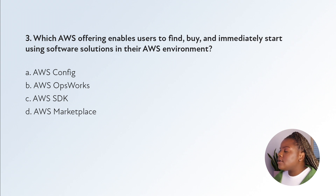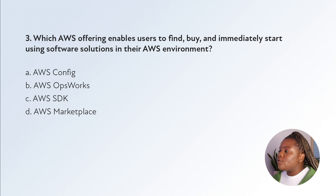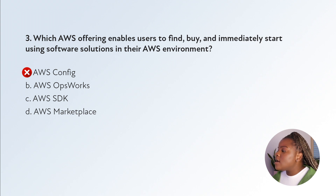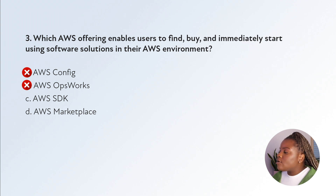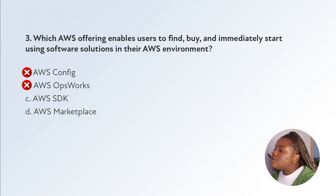Question three: which AWS offering enables users to find, buy, and immediately start using software solutions in their AWS environment? AWS Config enables you to access, audit, and evaluate the configurations of your resources — that's not it. AWS OpsWorks is a configuration management service providing managed instances of Chef and Puppet. The AWS SDK is programming toolkits that simplify the use of AWS services for developers — nothing to do with buying software solutions.